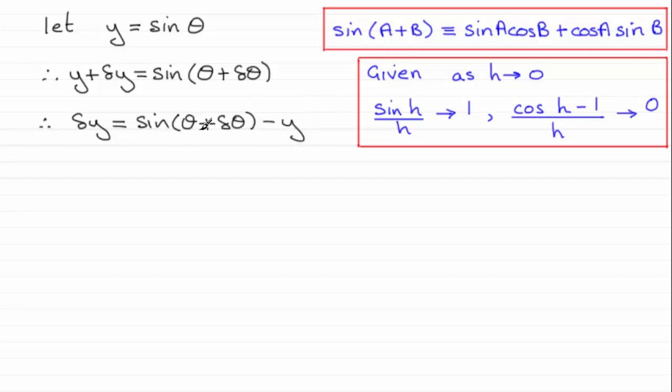And the next stage is to work with the identity up here. I'm going to expand the sine of theta plus delta theta, replacing the a with theta and the b with delta theta.